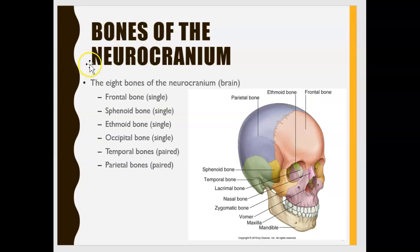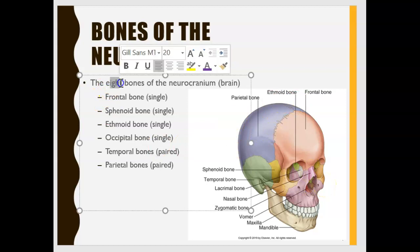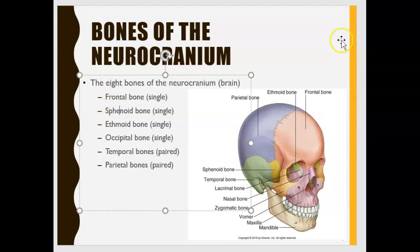So let's look at the bones of the neurocranium. When you see that word neuro it refers to brain. So we're going to look at the bones surrounding the brain and there are eight bones that surround the brain. First one is frontal and that's pretty easy because it's right in the front, where your forehead is.